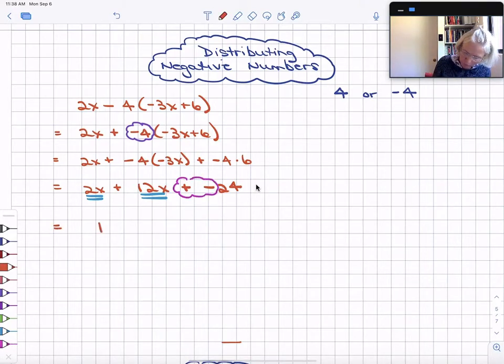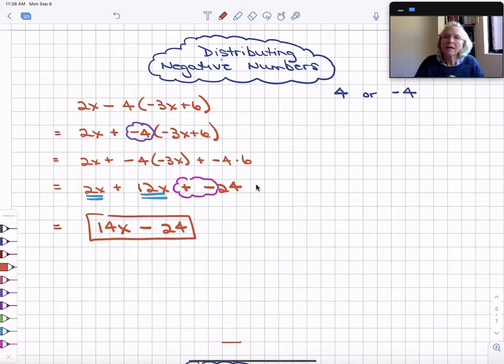So that's equal to 14x, 2 plus 12, plus a negative is the same as subtracting the opposite, subtracting a positive, minus 24. And there's our fully simplified expression.